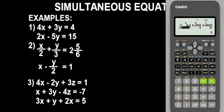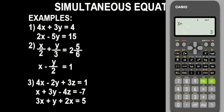For equation 2 of question 2, the coefficient of x is 1, and the coefficient of minus y/2 is minus 1 divided by 2. The constant is 1. Press Enter. Let's press Enter again to get the values of x and y. Our x is 3 and y is 4. It's as simple as that.